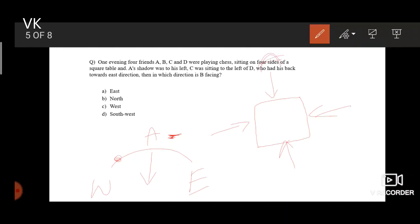A must be sitting here according to the data. And C was sitting to the left of D, who had his back towards east. So D had his back towards east. These are the directions. South. So C is to the left of D.